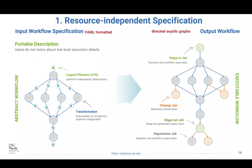Pegasus takes this abstract description and generates an execution graph that adds jobs to move the data — staging data into computations. If execution is on two different resources, it adds additional data transfer nodes to the graph. It stages data out to where the user wants it, registers the data so you can find it again, and does some data cleanup.